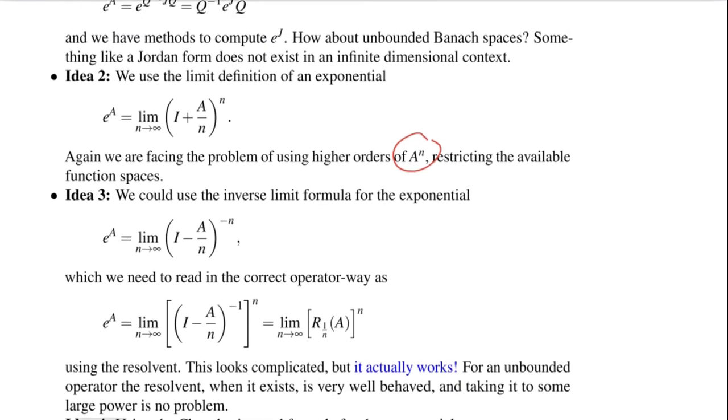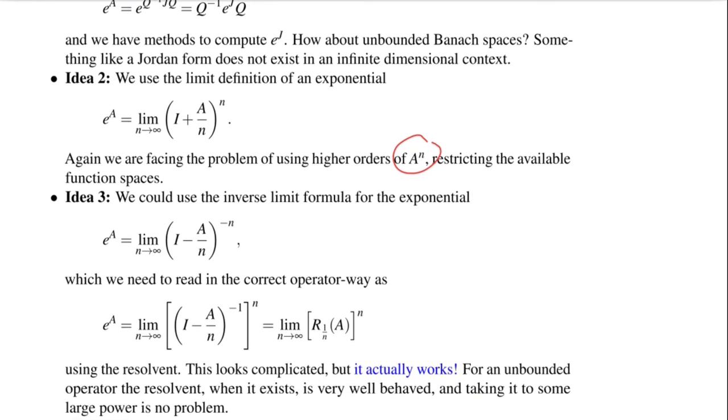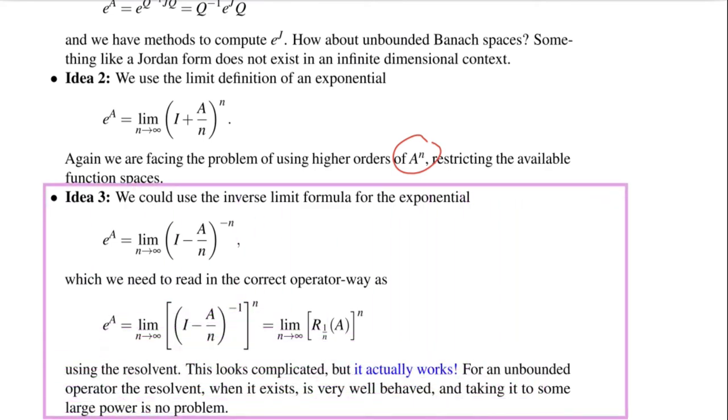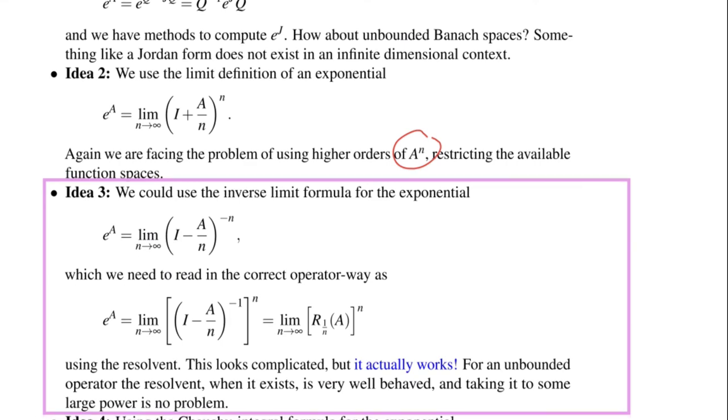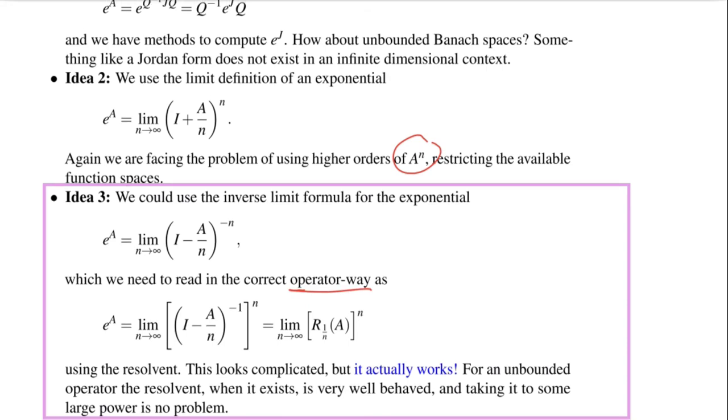Idea number three. We can use the inverse limit formula. We just replace n by minus n and that still works. So write e to the A as limit n to infinity, I minus A divided by n to the power of minus n and then send n to infinity. Now this to the minus n needs to be read in the correct way, in the operator way. So this really is the inverse to the power of n. And then we have the resolvent notation. So it is the resolvent to the lambda is 1 over n of A, to the power of n.